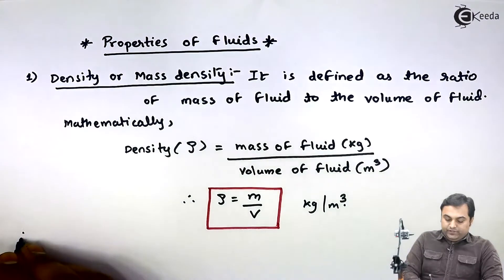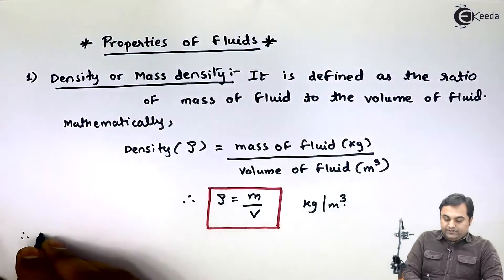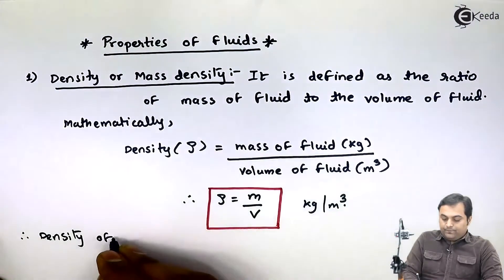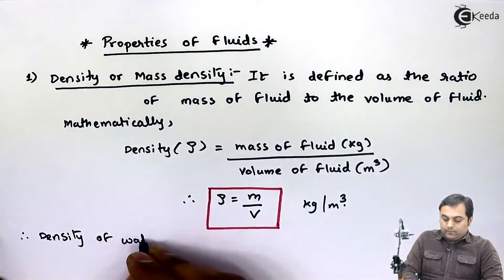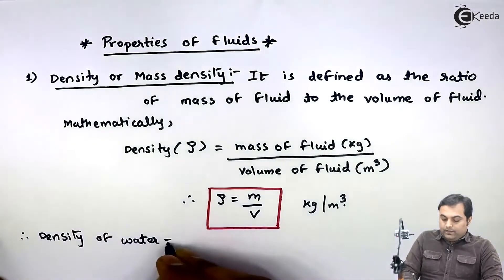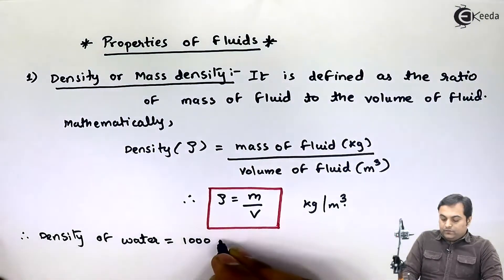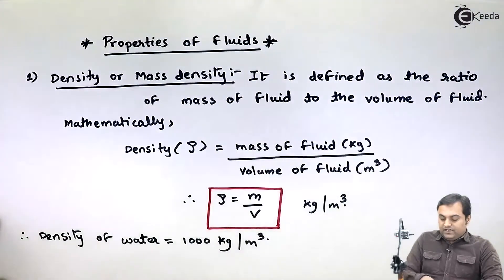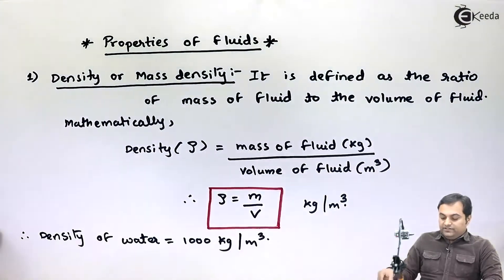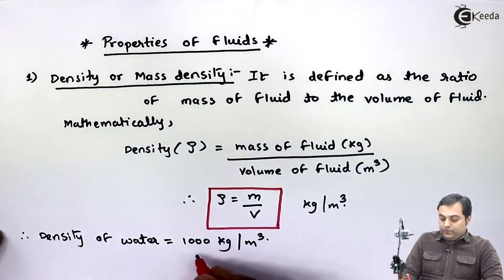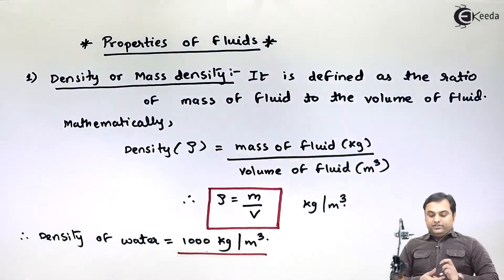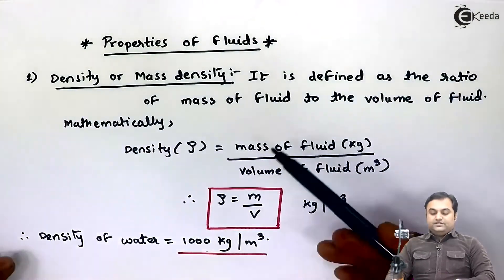The density of water is equal to 1000 kg per meter cube. This is the standard or reference liquid. So this was regarding mass density — it is defined as the ratio of mass of fluid to the volume of fluid.